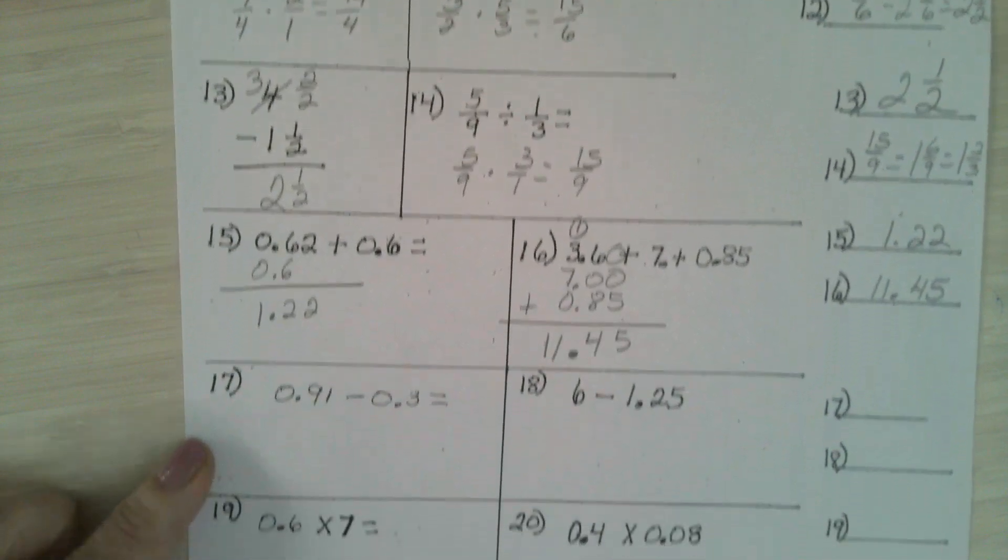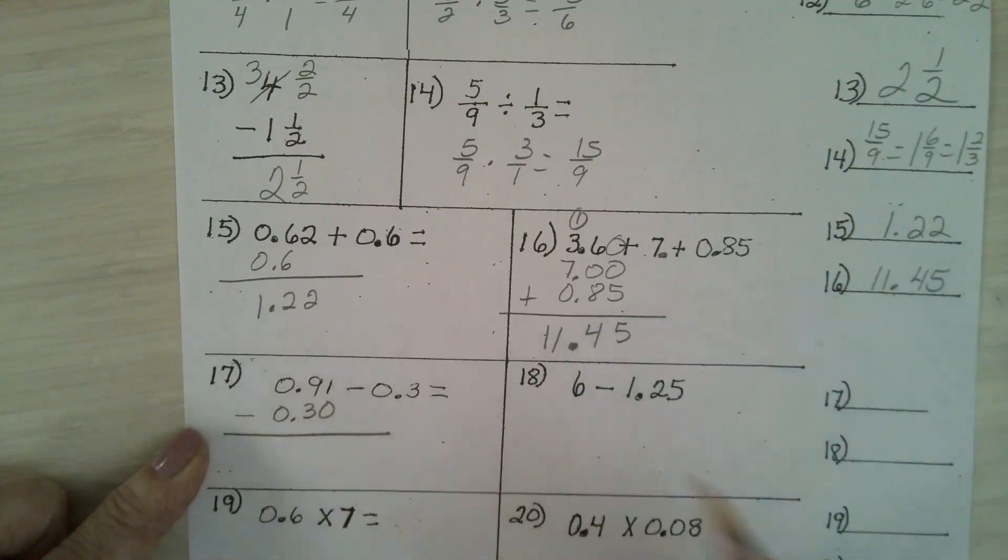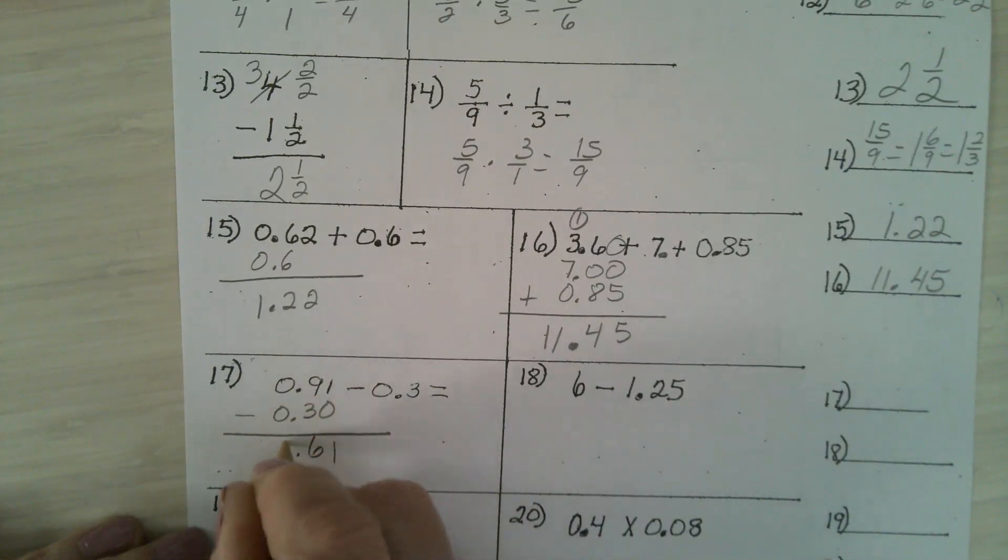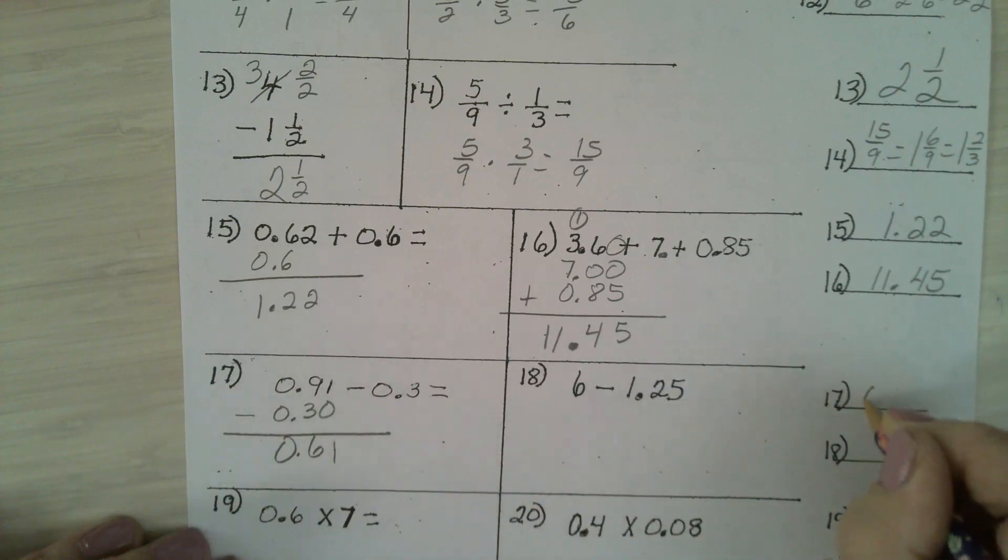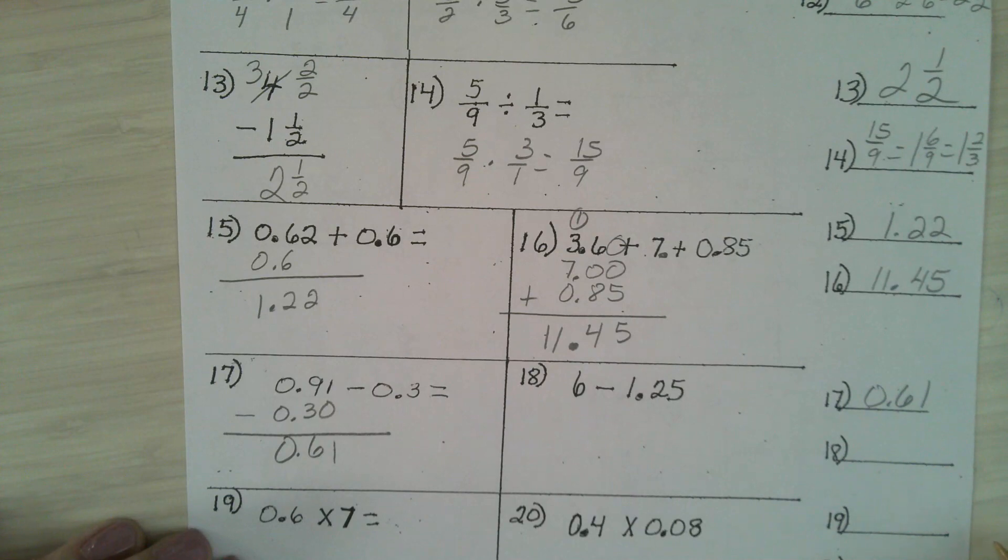Number 17. You are subtracting. Line up your decimal points. You can put a zero in the empty spot. 1 minus 0 is 1. 9 minus 3 is 6. And the answer is 0.61 or you could just have 61 hundredths.